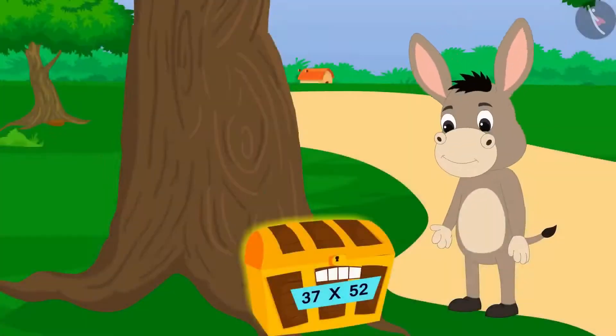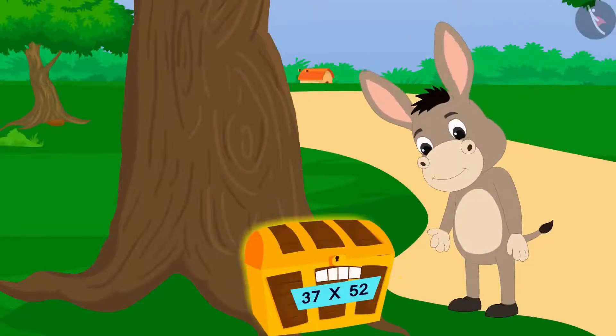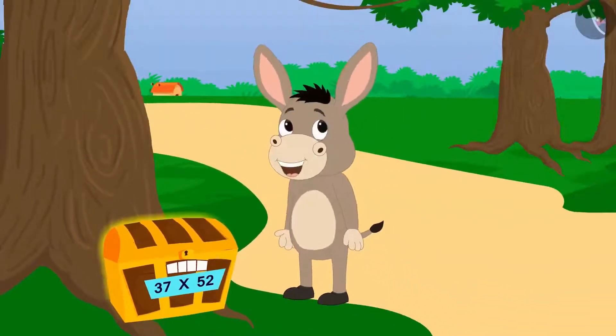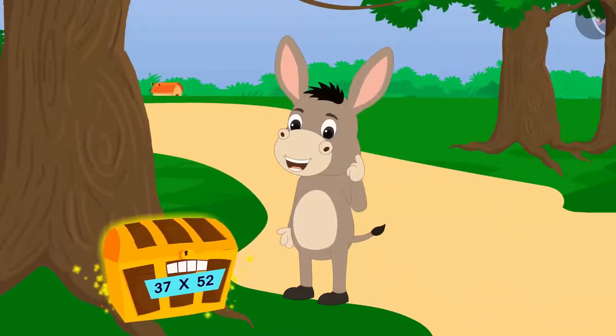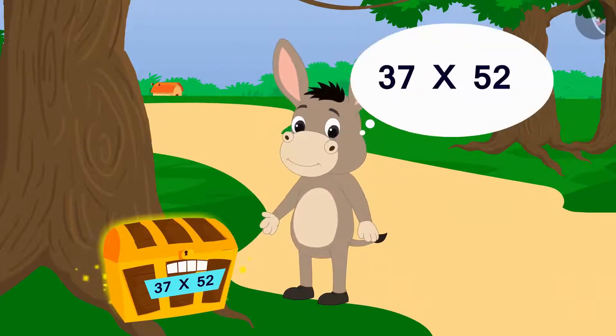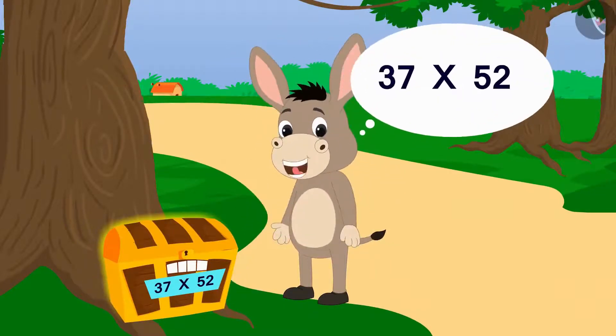Bhola noticed that this multiplication was written under the lock. Well, now I understand the code to open this lock could be 37 times 52.